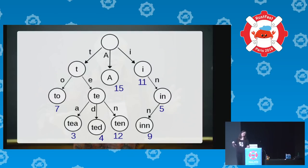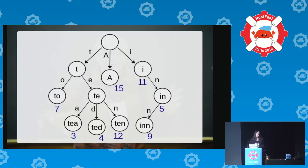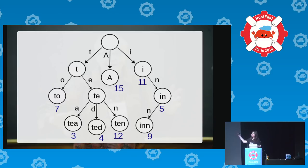The idea is that you split up the key into its subcomponents and use that as a search path through the tree. Here's a diagram from Wikipedia: using strings as keys, if you want to look up 'Ted' (which maps to four), you split the word into its component letters — T, then E, then D — and that's four.